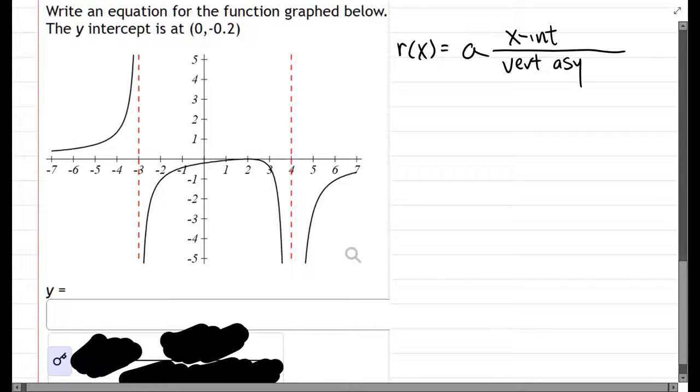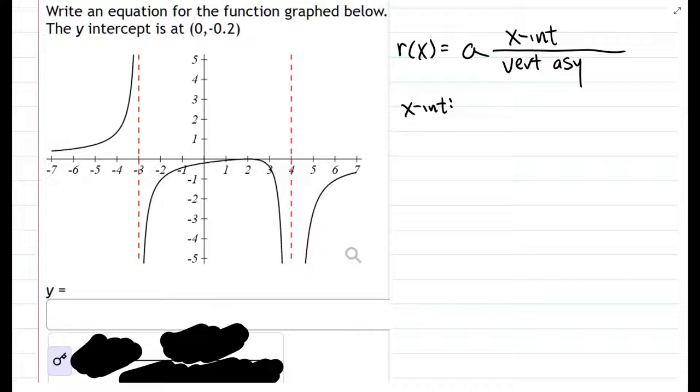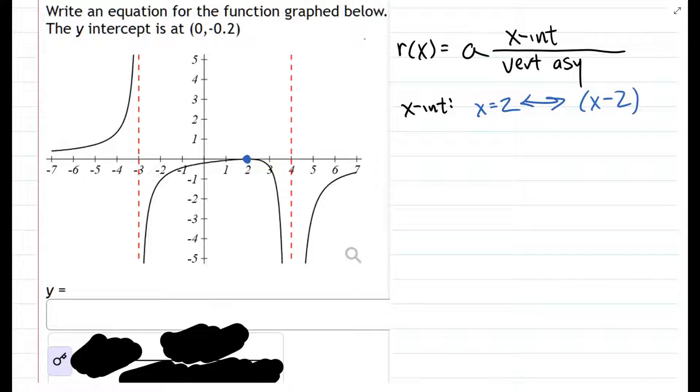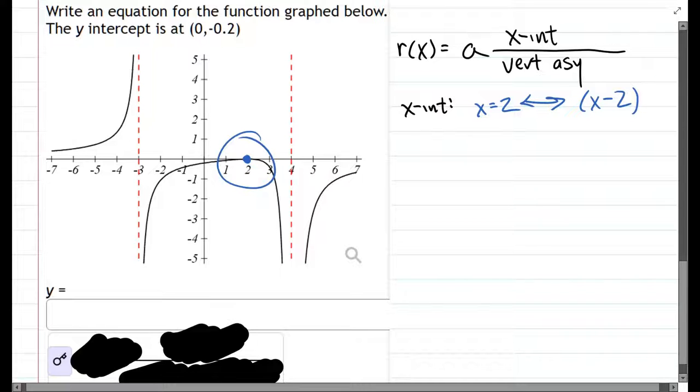Let's go ahead and write down the x-intercepts first. This function has exactly one x-intercept at x equals two, which corresponds to the factor x minus two. Now we have to decide is this crossing or bouncing. If we look at this, it went from negative back to negative, so this is going to be a bounce.